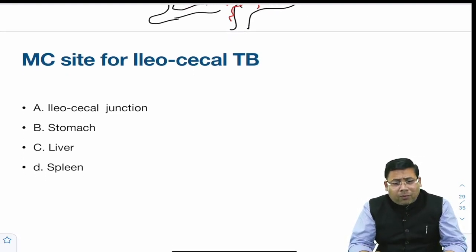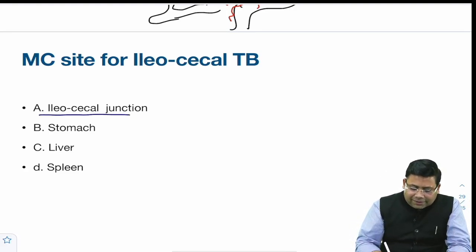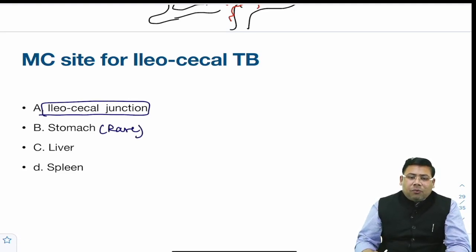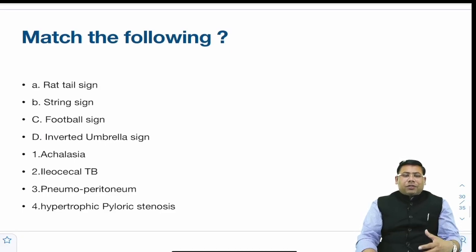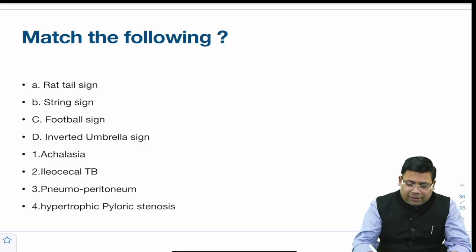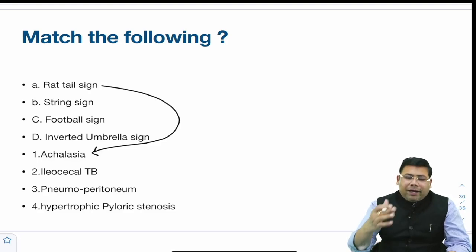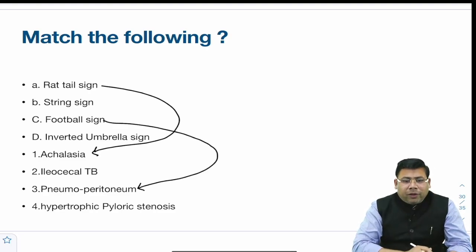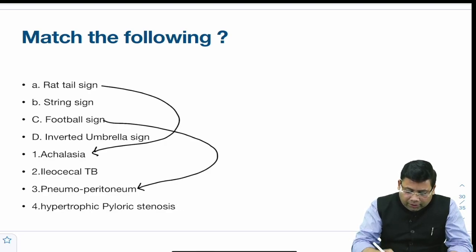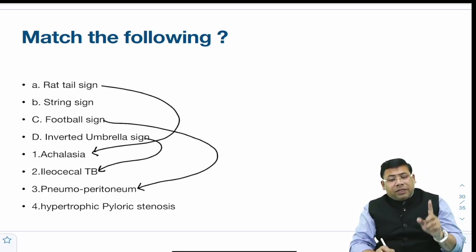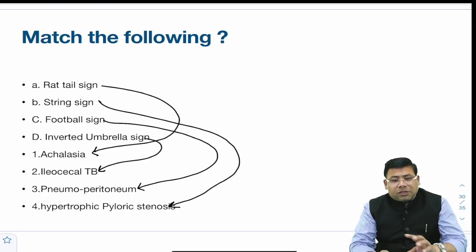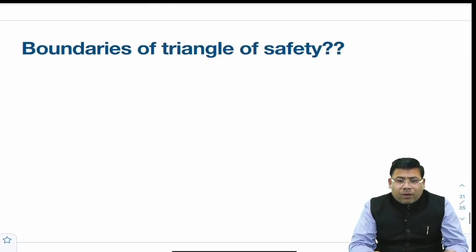The most common site for ileocecal TB is the IC junction — a throw-forward question. Stomach is a rare site. There was also a question on radiology signs: rat tail sign is more common in malignancy (achalasia); football sign indicates pneumoperitoneum; inverted umbrella sign is seen in ileocecal TB; string sign is seen in TB and also in hypertrophic pyloric stenosis.